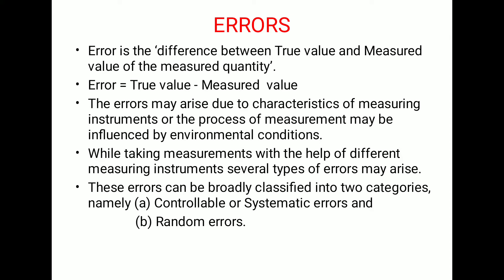The errors may arise due to the characteristics of measuring instruments, or the process of measurement may be influenced by environmental conditions. While taking measurements with the help of different measuring instruments, several types of errors may arise. These errors can be broadly classified into two categories, namely controllable or systematic errors and random errors. Let us see types and sources of errors one by one.